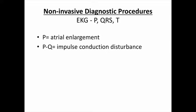The distance between the P wave and the Q — if that elongates, that indicates a conduction disturbance, because it's taking longer for the impulse to travel from the atria to the ventricles. If you have an abnormally large QRS complex, that historically is indicative of ventricular hypertrophy.